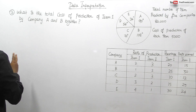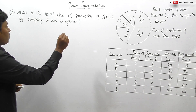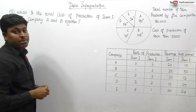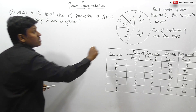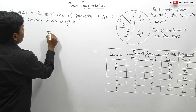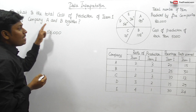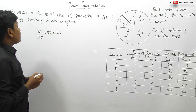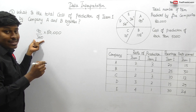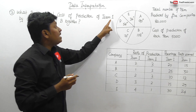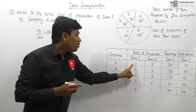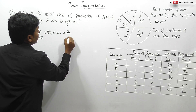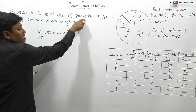Question number 2: what is the total cost of production of item number 1 by company A and B together? Total production is 80,000. Company A accounts for 90 degrees, written as 90 divided by 360. Company A's item number 1 is 2 parts out of a total of 5, so 2 divided by 5.